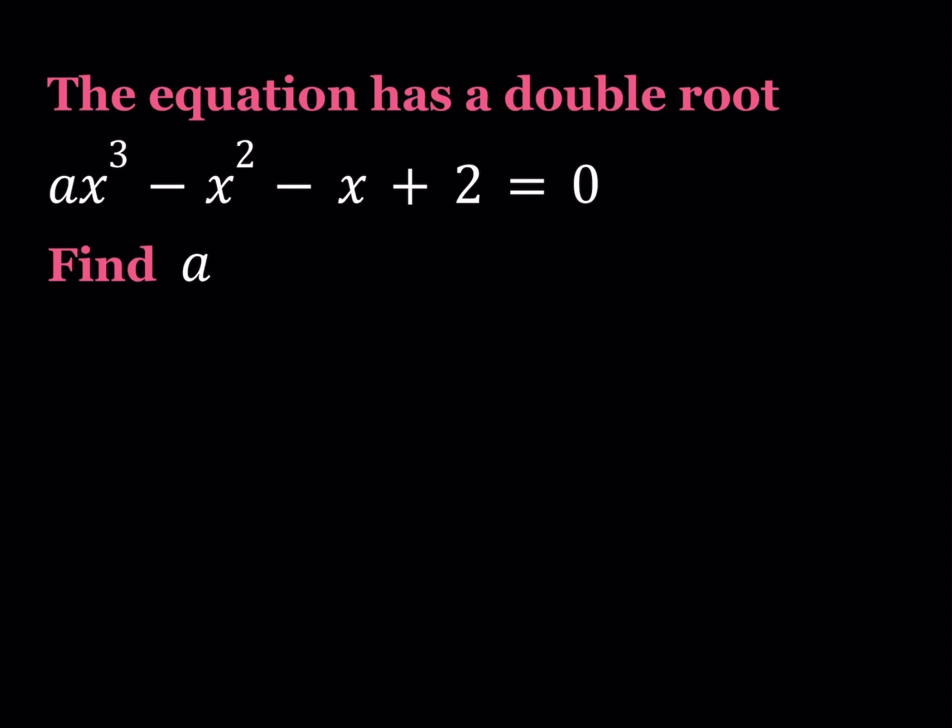Hello everyone. In this video we're going to be looking at a cubic equation with double roots. The equation ax³ - x² - x + 2 = 0 has a double root, which means this cubic equation has three roots, real and complex, and we're saying that x₁ equals x₂ and they're different from x₃. In order for this equation to have a double root, what is the value of a?